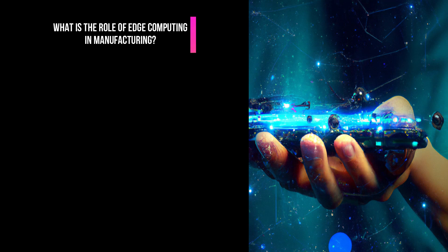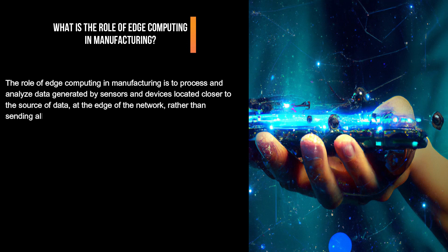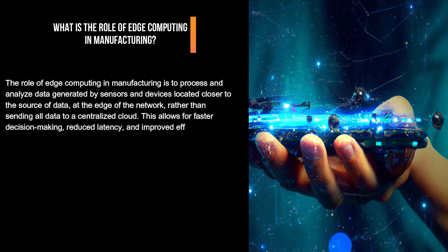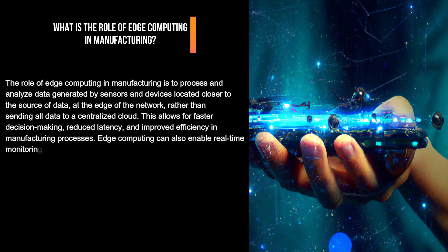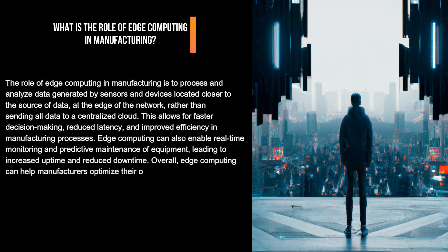What is the role of edge computing in manufacturing? The role of edge computing in manufacturing is to process and analyze data generated by sensors and devices located closer to the source of data at the edge of the network, rather than sending all data to a centralized cloud. This allows for faster decision-making, reduced latency, and improved efficiency in manufacturing processes. Edge computing can also enable real-time monitoring and predictive maintenance of equipment, leading to increased uptime and reduced downtime. Overall, edge computing can help manufacturers optimize their operations, improve productivity, and reduce costs.